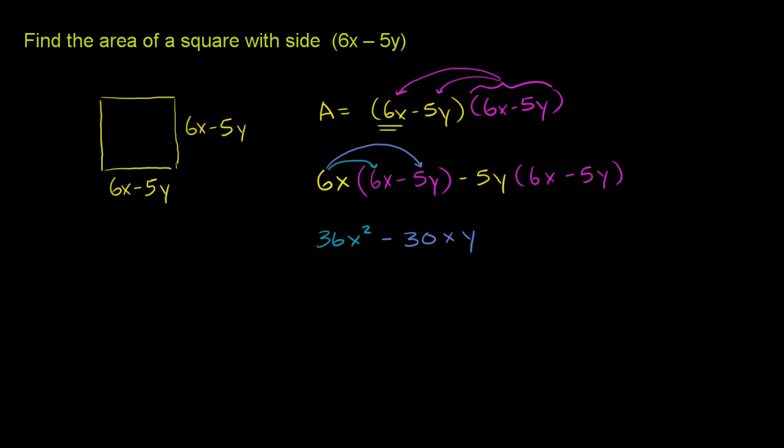And then I want to take, I'm trying to introduce many colors here. So I have this negative 5y times this 6x right over here. So negative 5 times 6 is negative 30. And I have a y and an x, or an x and a y. And then finally, I have my last distribution to do.